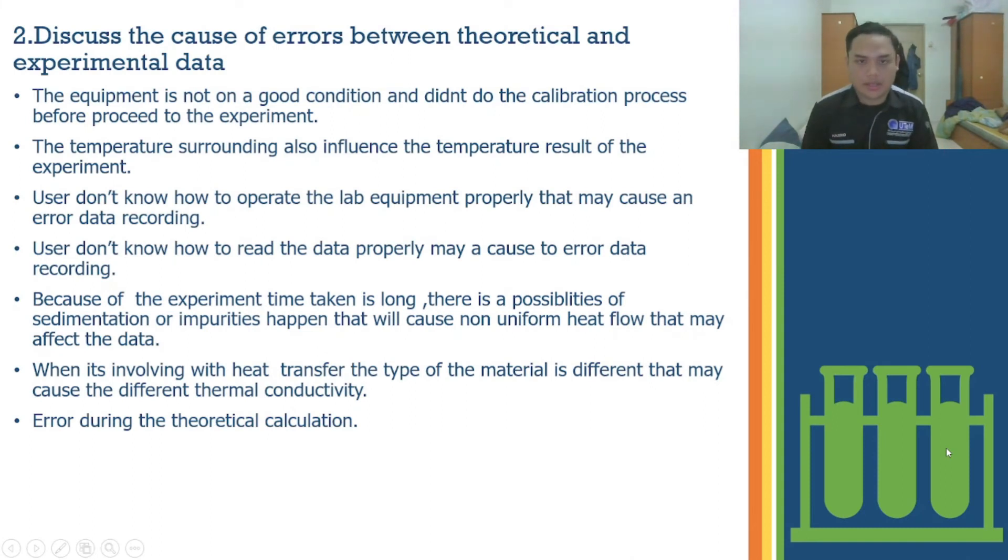Assalamualaikum and hi. My name is Hazrik Hakim Benjulaily. And today, I will discuss our radial conduction lab experiment for heat transfer. So I will continue the discussion of question number two, which is discuss the error between theoretical and experimental data. Based on our findings, we have studied that the cause of error between theoretical and experimental data is reason number one: the equipment is not in good condition and didn't do the calibration process before proceeding with the experiment.